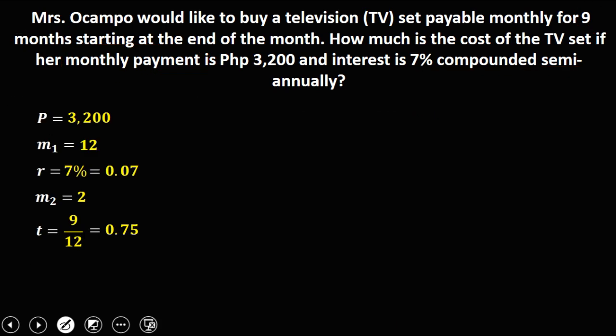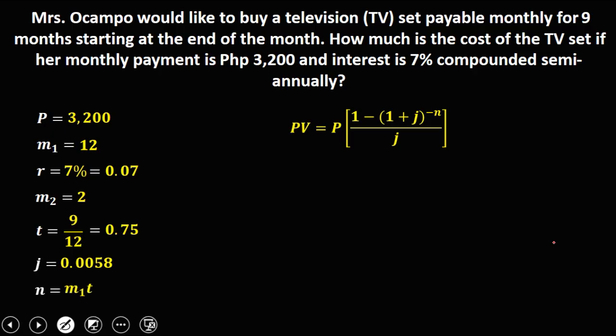To solve for the present value, using this formula, J is 0.0058. Then N equals M sub 1 times the time, so 12 times 0.75, therefore N is 9.